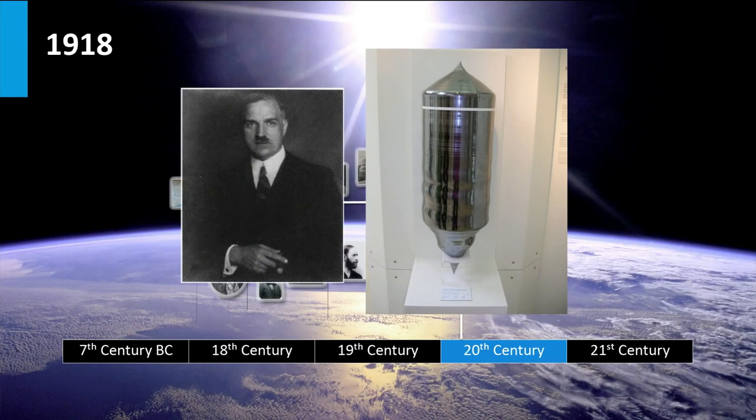In 1918 the Polish scientist Jan Czochralski developed a way to grow single crystalline silicon, a technique of great importance for the solar cell technologies based on crystalline silicon wafers, which has been developed in the second half of the 20th century. In week 4 we will come back to this processing method.